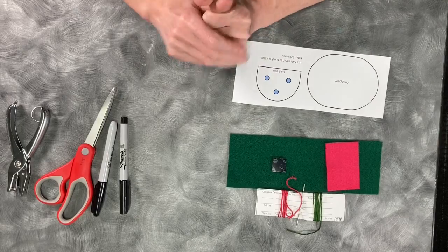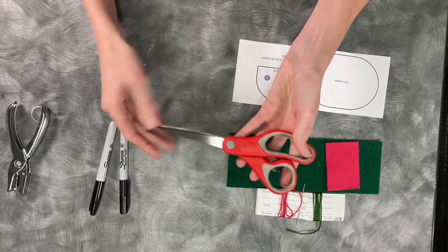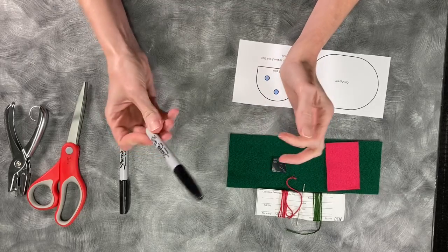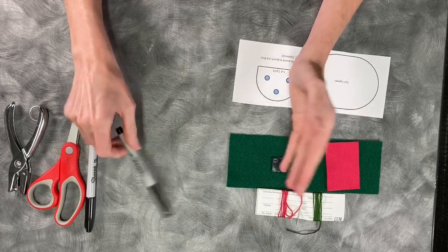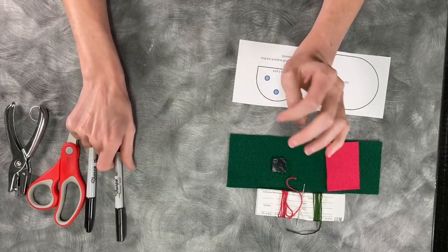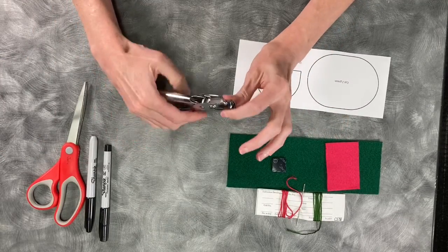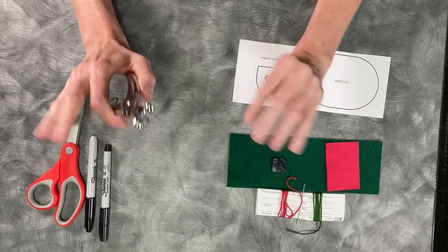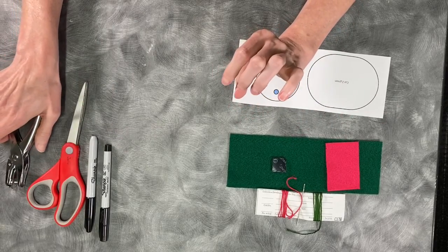Now what you will have to provide at home will be a pair of scissors, a sharpie. Most likely this one will do you just fine. I have the fine point one just in case. And if you have a hole punch it will be handy but it's not necessary and I'll show you why later on.